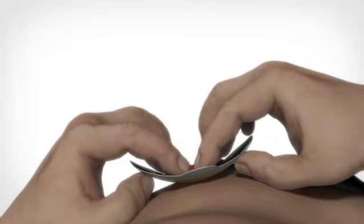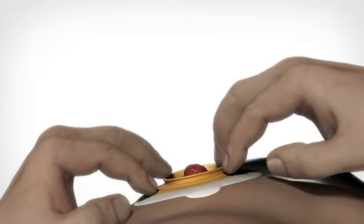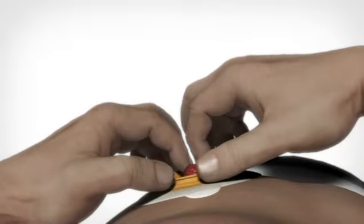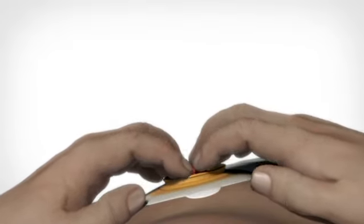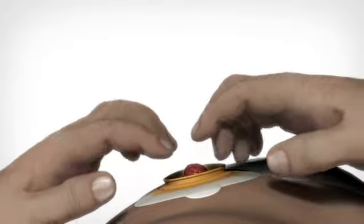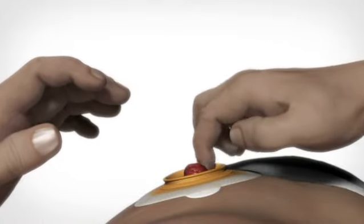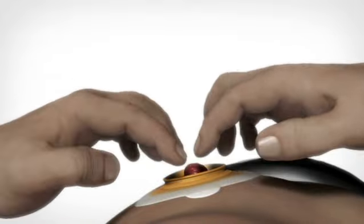When applying the adhesive, begin closest to the stoma by pressing the adhesive to the skin. Run a finger all the way around the stoma to ensure that the adhesive seals. You may want to use a mirror to check the sealing.